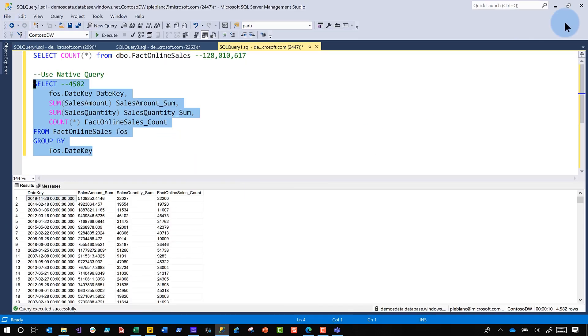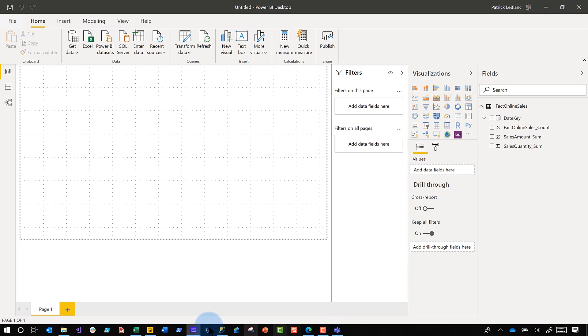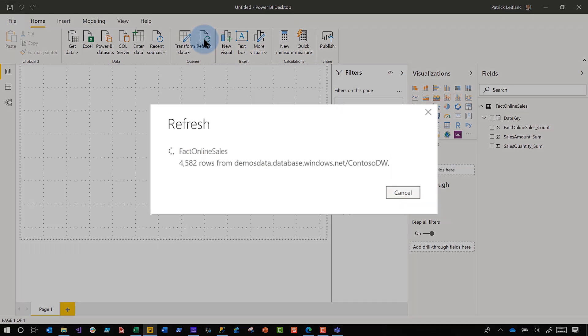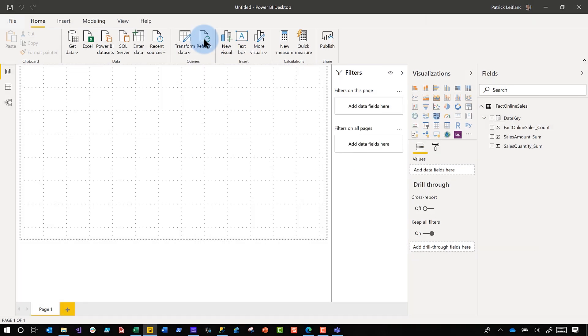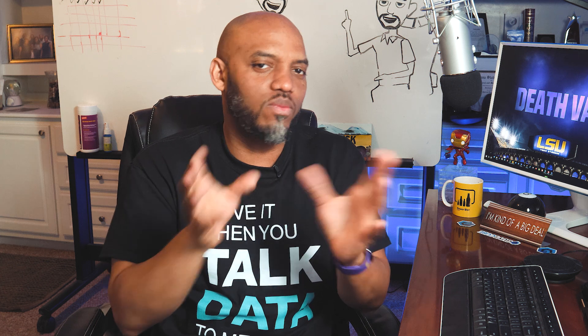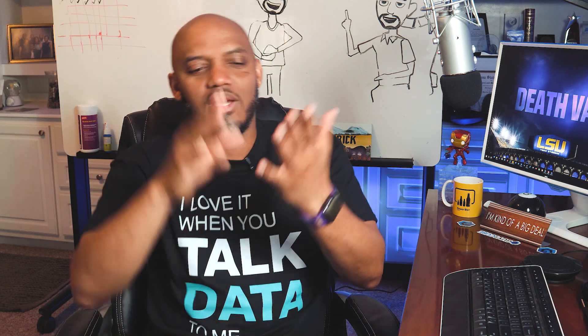And do a refresh. And let's see how many rows this is going to pull back. 4,582. If you paid attention fast enough, it was 4,582, which is equal the same number of rows that were returned when I ran that query. What? This is bananas. So you can create it. You can persist it as part of your ETL. You can create a view. You can use a native query, or you can use Power Query.